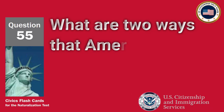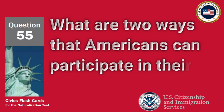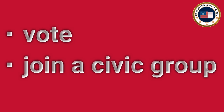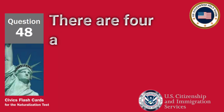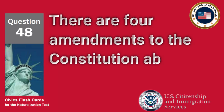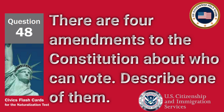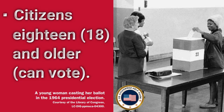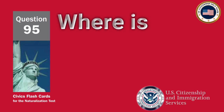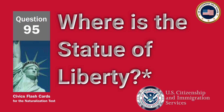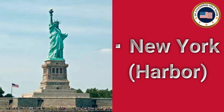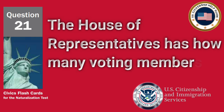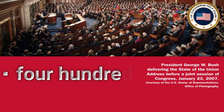What are two ways that Americans can participate in their democracy? There are four amendments to the Constitution about who can vote. Describe one of them. Citizens 18 and older can vote. Where is the Statue of Liberty? New York Harbor. The House of Representatives has how many voting members? 435.